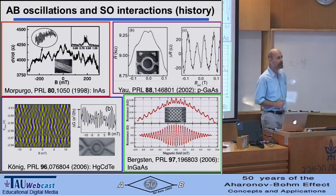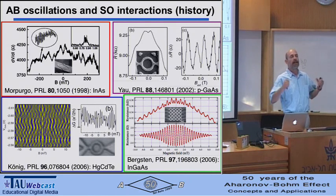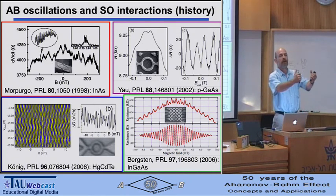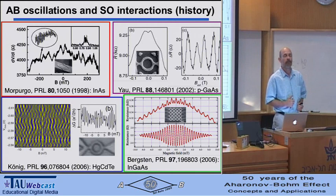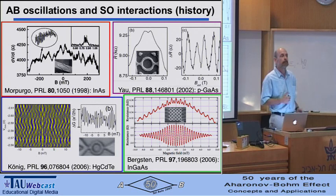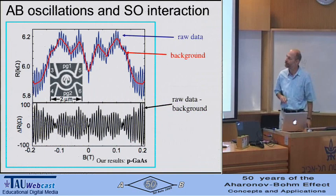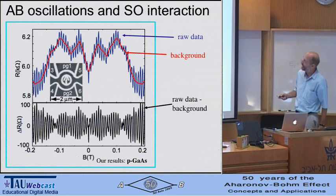The basic feature you would like to look for is: if you simply have electrons, you expect one nice Aharonov-Bohm periodicity. However, if you include spin and spin-orbit interactions, you expect a splitting of the Aharonov-Bohm oscillations or a splitting in the Fourier transform of the system.